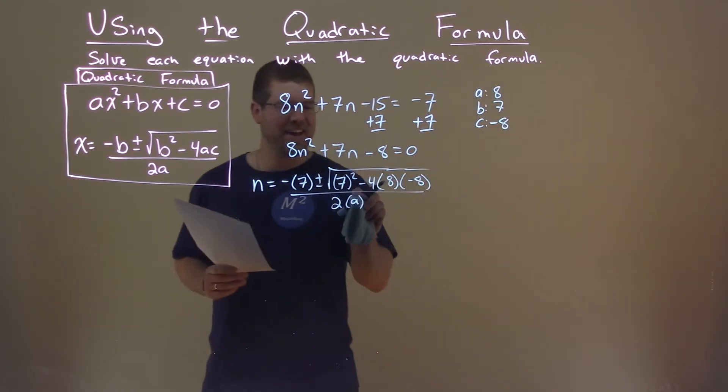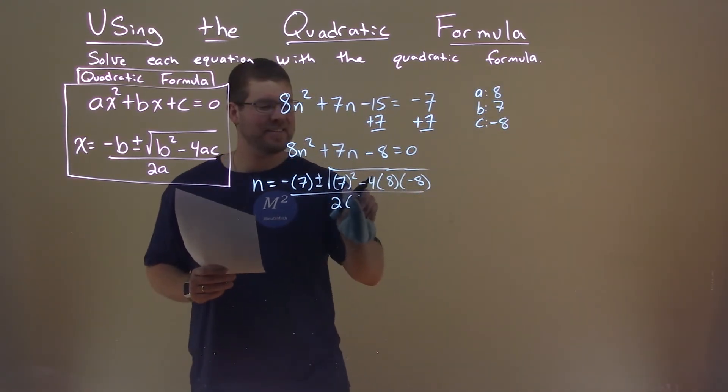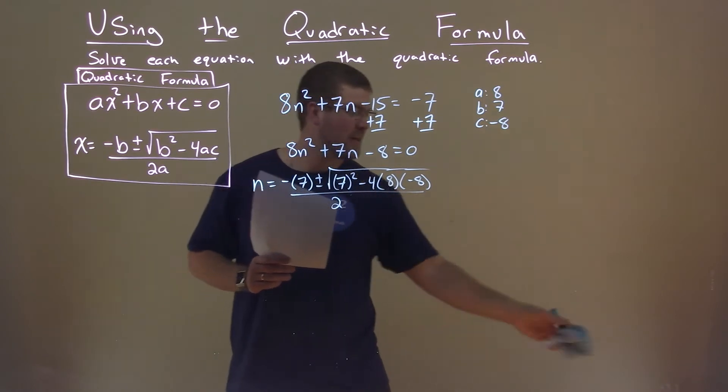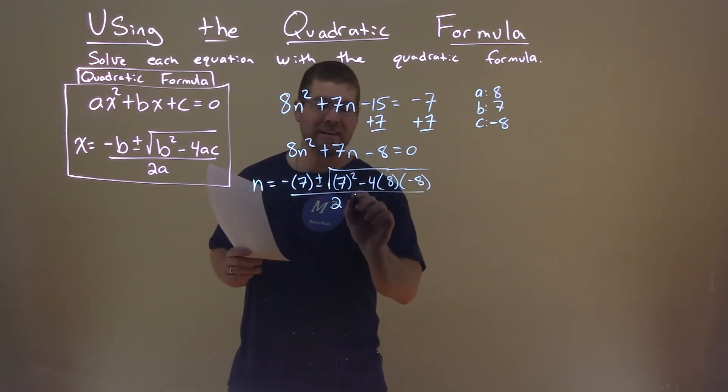a is — I said a, but I want 8. I always do that when it's 8s and a's. So 2 times 8.